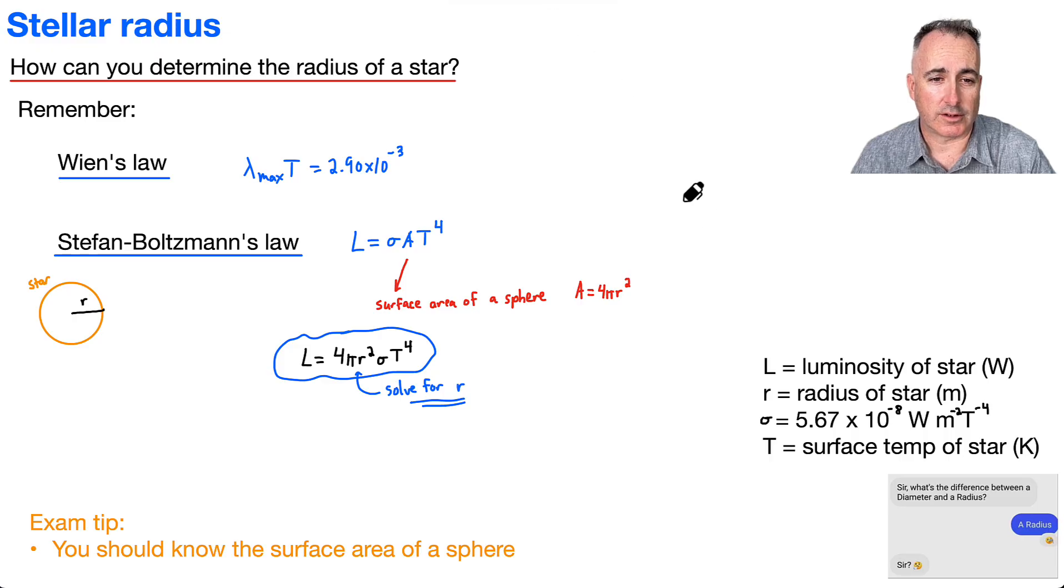So what I want you to know, we have a luminosity in watts, we have the radius of the star in meters, we have sigma, which is 5.67 × 10⁻⁸. You look it up, and T is the surface temperature of the star, which maybe you need from here. But I need you to know how to find the surface area of a sphere. It's 4πr². You need to know this.